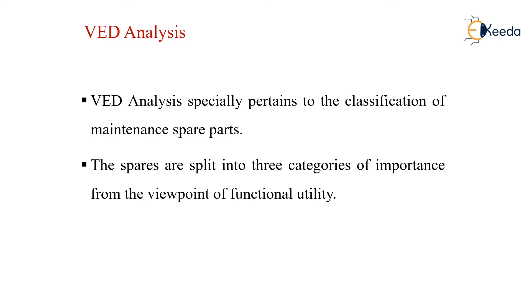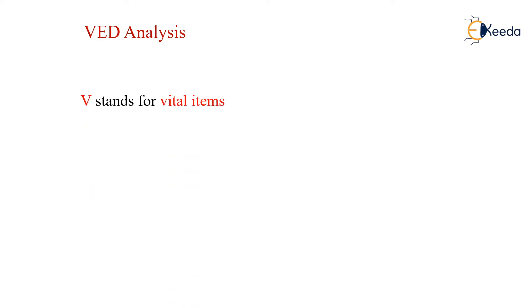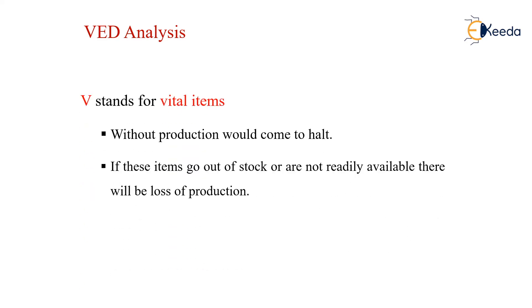The three categories are V, which stands for vital items. Without these, the production would come to a halt. If these items go out of stock or are not readily available, there would be a complete loss of production, like the engine of a system or the piston and cylinder arrangement of a four-stroke engine or a bike.